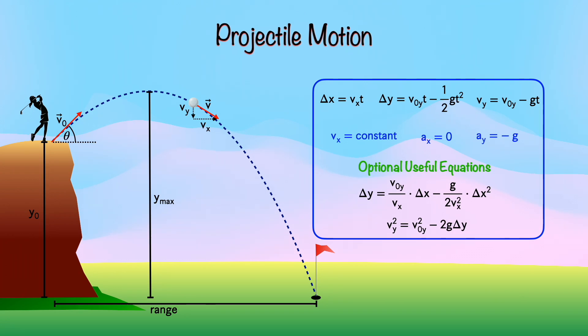If on the other hand, you do understand what's going on, well, then you don't need to write down extra equations in the first place. You already get that these three equations are all you need. And if you truly understand what's going on, then the only equation you really need is acceleration equals constant. Everything else follows from that.